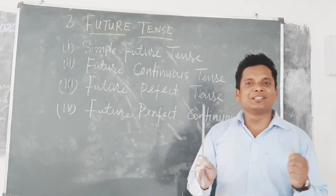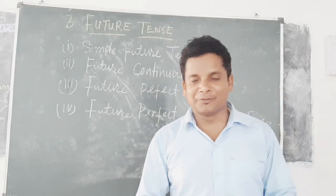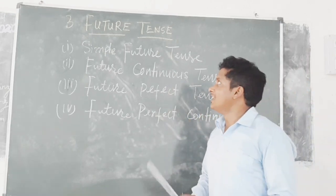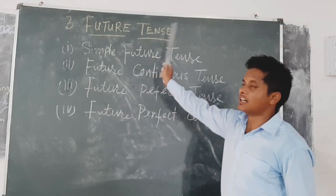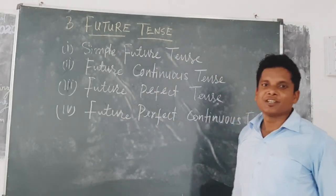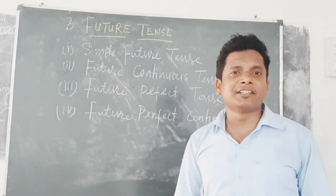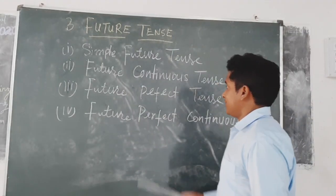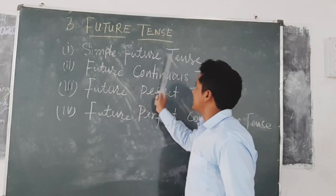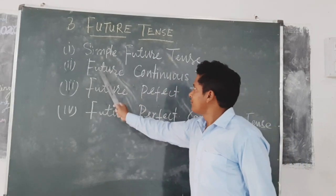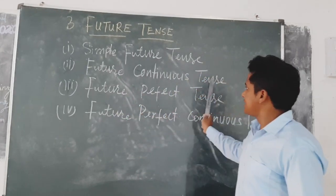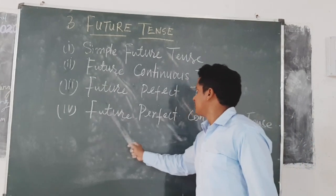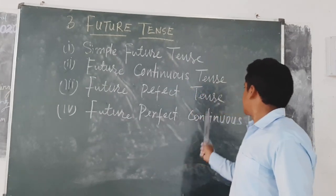So now we have learnt about the uses of shall and will. Now let us proceed ahead and learn about the future tense. Future tense is also divided into four parts: first, simple future tense; second, future continuous tense; third, future perfect tense; and fourth, future perfect continuous tense.